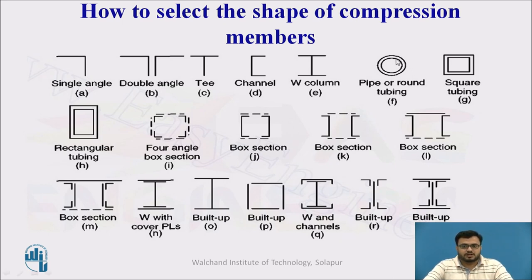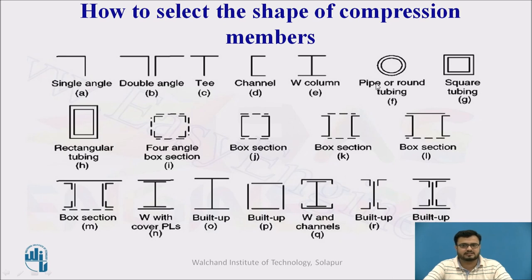Due to difficulty in connection with pipe sections, we typically select square tubing or rectangular tubing. However, due to advancements in welding, we can now select pipe sections suitably.